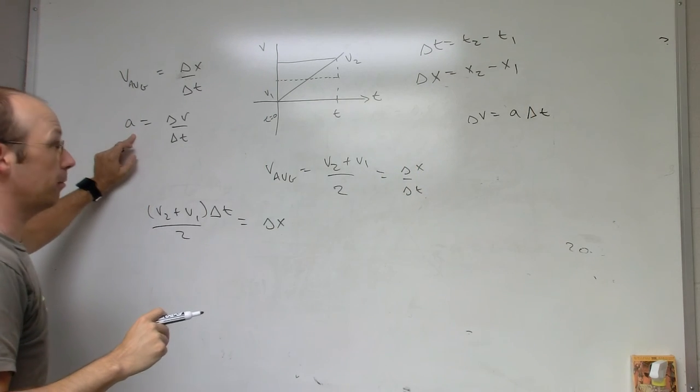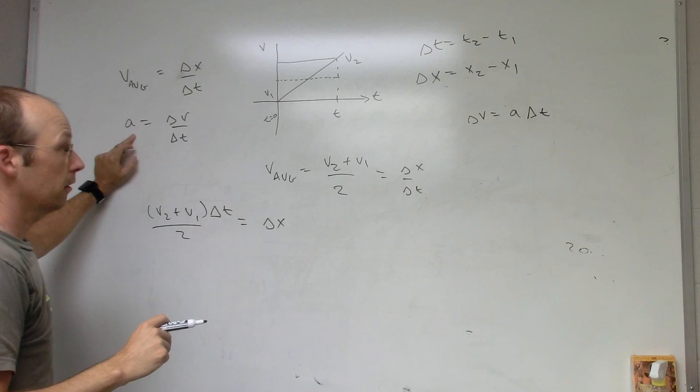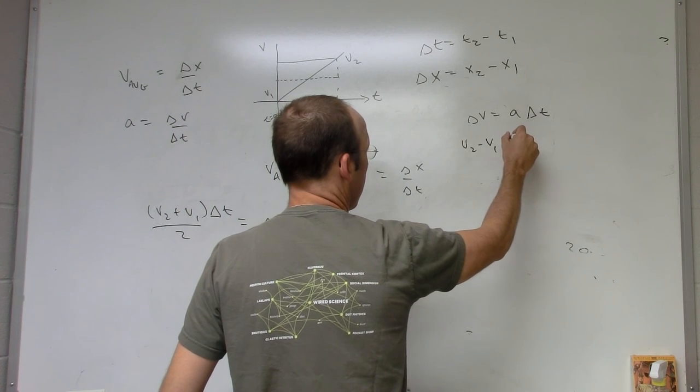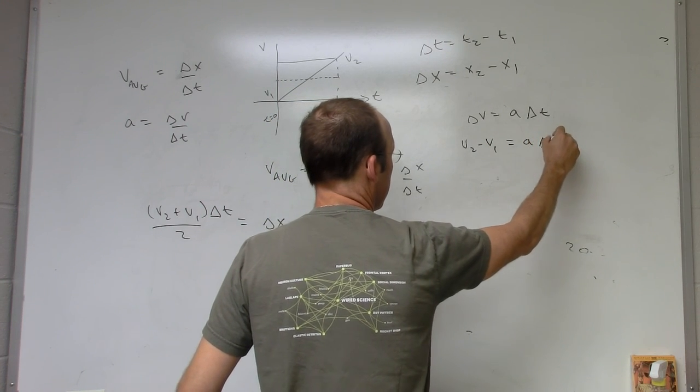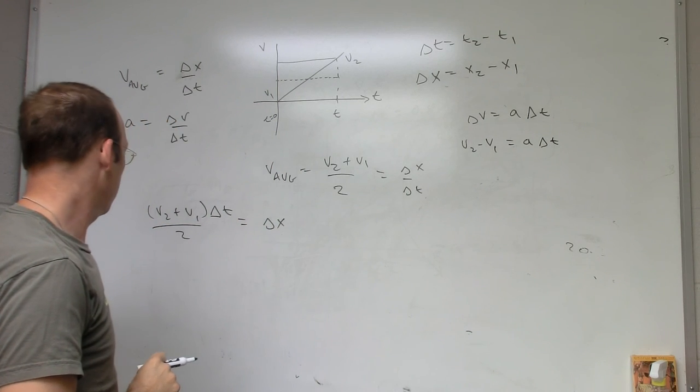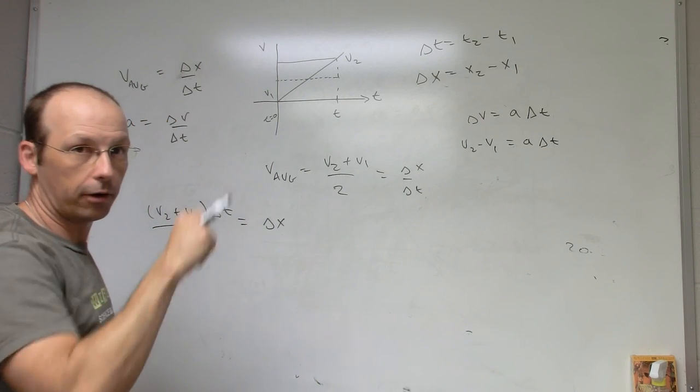Let's say delta v equals a delta t. This equation is multiplied both sides by delta t. Okay, so now delta v, it's going to be v2 minus v1 equals a delta t. No, I'm doing okay. I'm in the right spot.